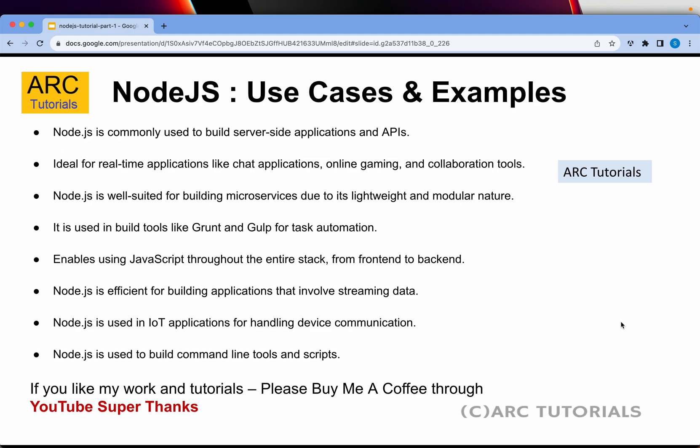Some classic examples and use cases: Node.js is commonly used to build server-side applications and APIs. It is ideal for building real-time applications like chat applications, online gaming, or collaboration tools. Node.js is well suited for building microservices due to its lightweight and modular nature. You can also use Node.js for task automation using tools like Grunt, Gulp, etc.